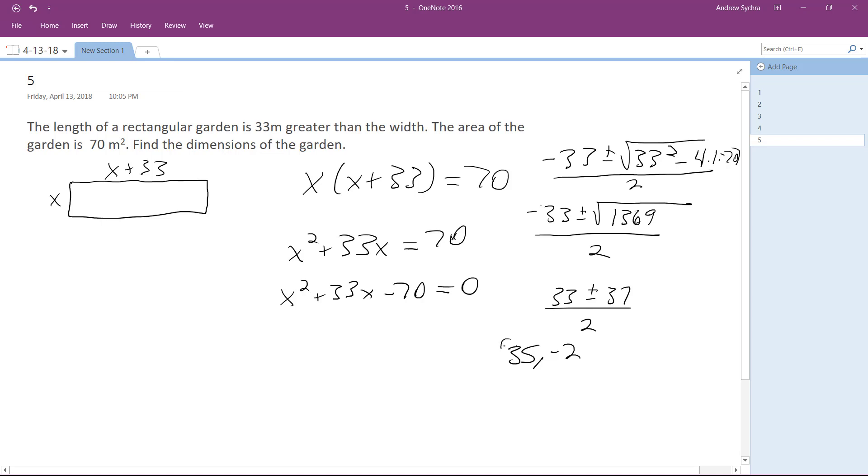So I'm going to take it back - I forgot to put in negative here. So it's negative 35 and 2. That makes sense.